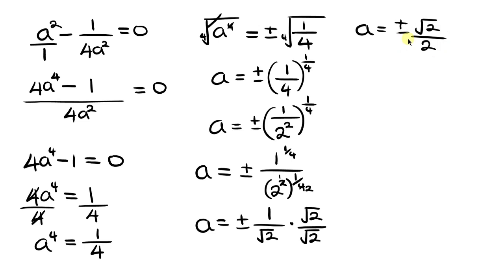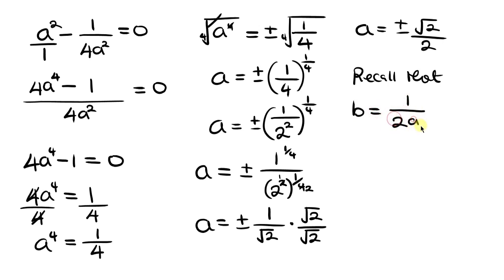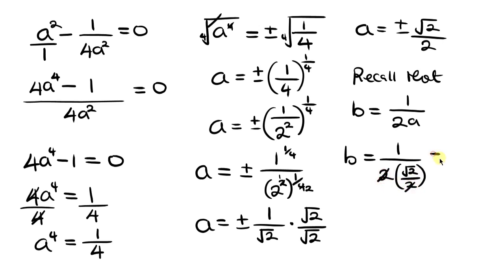Now we substitute these values of a into b = 1/(2a) to find b. For the positive value a = √2/2: b = 1/(2 · √2/2) = 1/√2 = √2/2 after rationalizing.